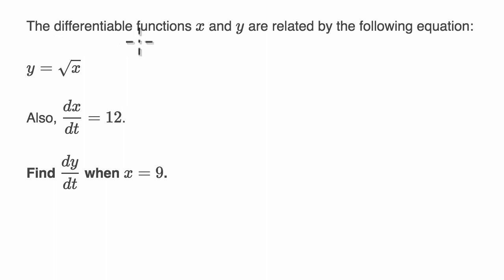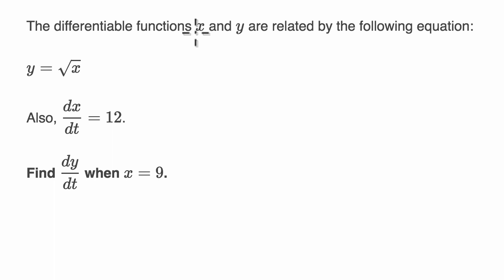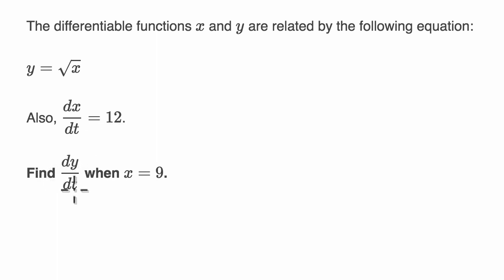We are told the differentiable functions x and y are related by the following equation: y is equal to the square root of x. They're telling us that they're both differentiable functions — even x is a function of something else. They tell us that the derivative of x with respect to t is 12, and they want us to find the derivative of y with respect to t when x is equal to nine.